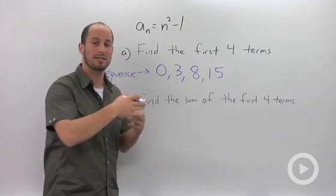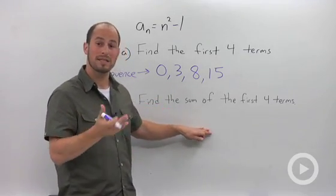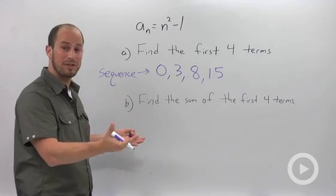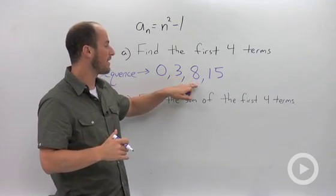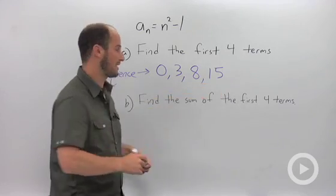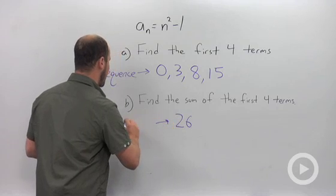So this right here is a sequence - four numbers written in order with commas in between, just a collection of numbers. Find the sum of those first four terms. We already found the four terms, all we have to do is add them together: 0 + 3 = 3, plus 8 is 11, plus 15 is 26.